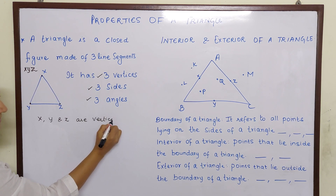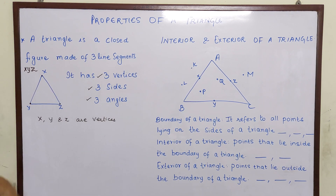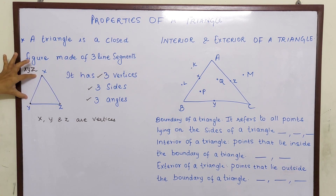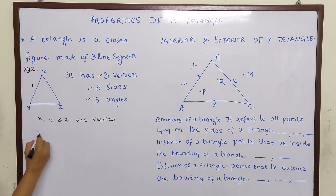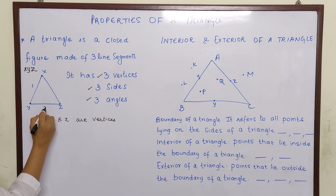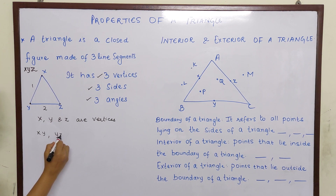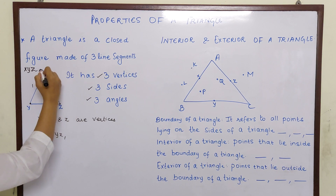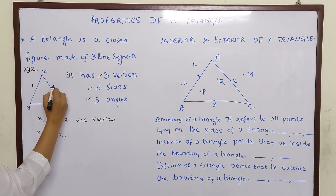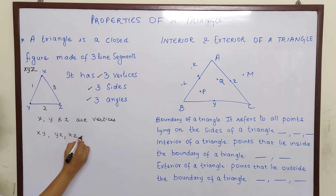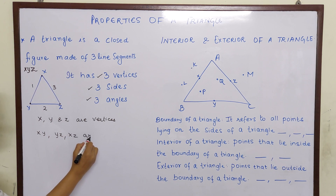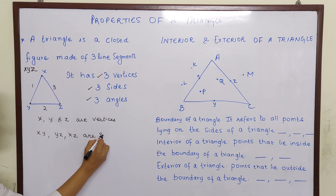In the same way, what are the three sides, children? XY — this is the first side. YZ — this is the second side. And XZ — this is the third side. They are the three sides.